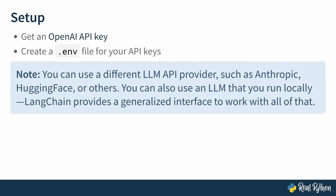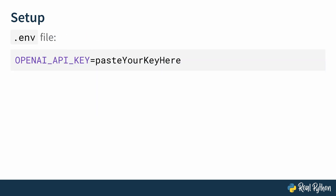Next, you'll need to get an OpenAI API key and put that key into your .env file. You don't have to use OpenAI — you can use any other LLM API provider or even a local LLM, and Langchain is able to work with all of those. But in this course I'll work with OpenAI. Once you have the key, put it in your .env file: make a new file called .env, and then it's literally just the name of the environment variable — OPENAI_API_KEY — followed by an equal sign and your key.